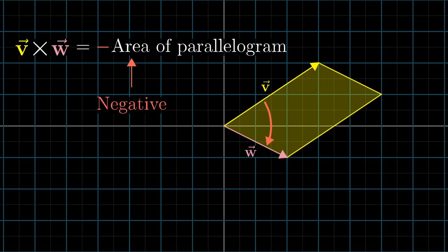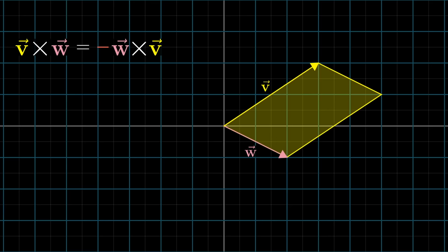Notice, this means that order matters. If you swapped v and w, instead taking w cross v, the cross product would become the negative of whatever it was before.